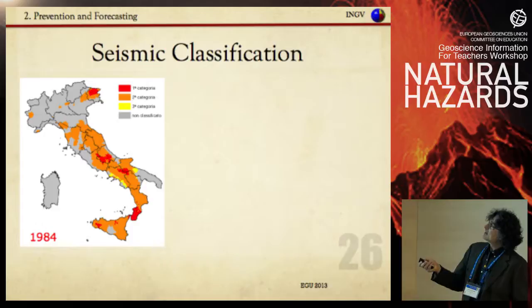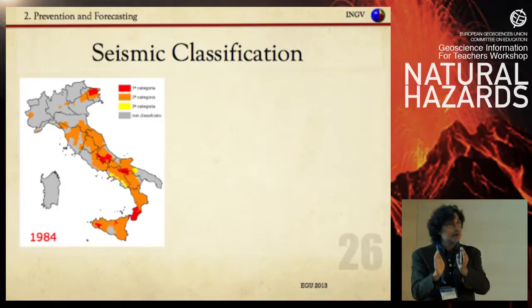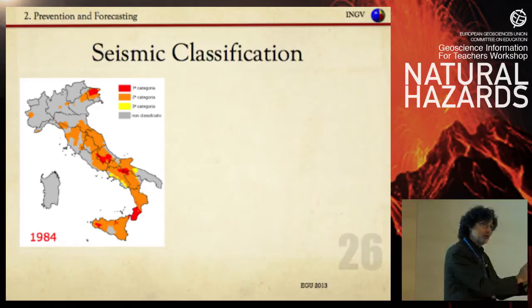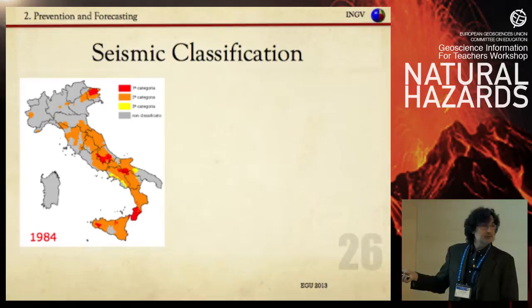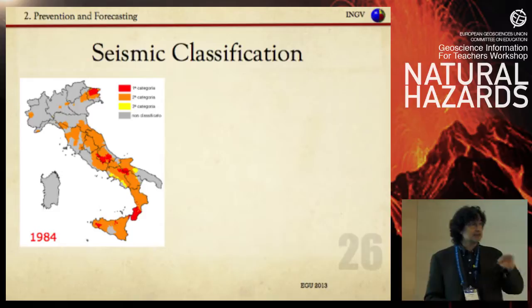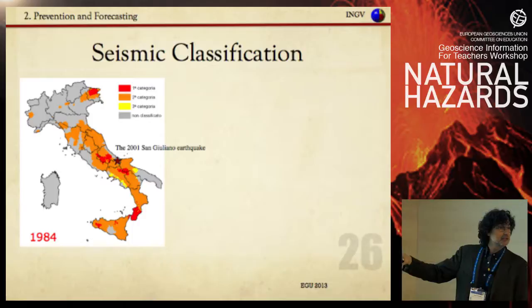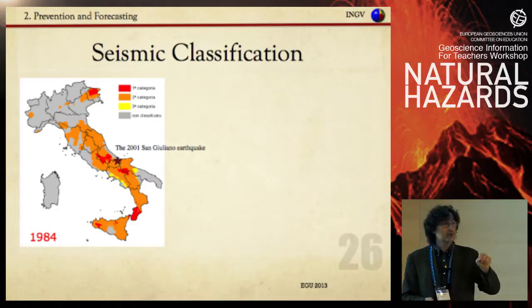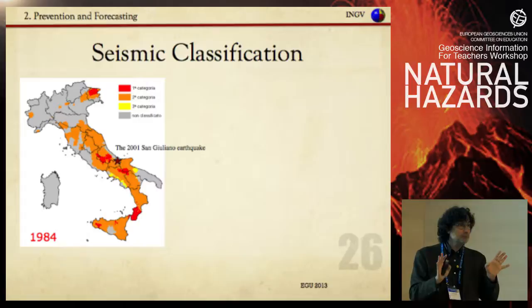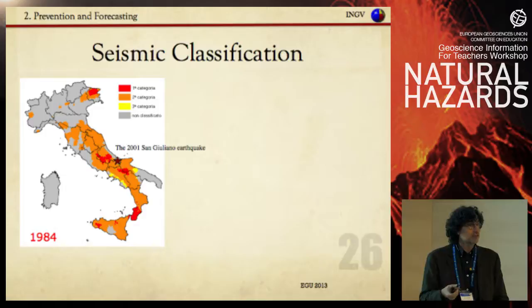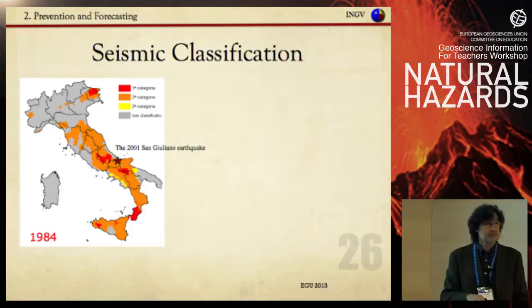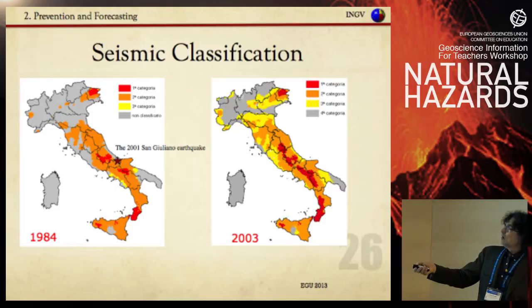This is the seismic classification of Italy. The seismic hazard map must become law and be applied by local authorities. This is the 1984 seismic classification — you see the gray area, which was the fourth unclassified category, meaning no rules applied. This is the San Giuliano di Puglia earthquake, where the school collapsed and children died. It occurred in a gray area; the buildings and even the school were constructed without any rules or building codes, because earthquakes there were very rare. The school collapsed not because of the severity of the earthquake, but due to structural failure.